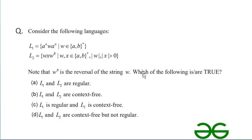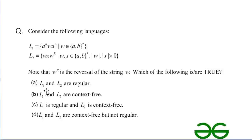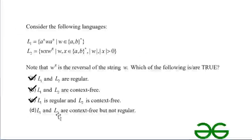Now let's consider the options. Option A says L1 and L2 are regular — true, because we have seen both are regular. Option B says L1 and L2 are context free — also true, because every regular language is also context free. Option C says L1 is regular and L2 is context free — also true. Option D says L1 and L2 are context free but not regular — false, because both are regular. So the correct answers are A, B, and C.